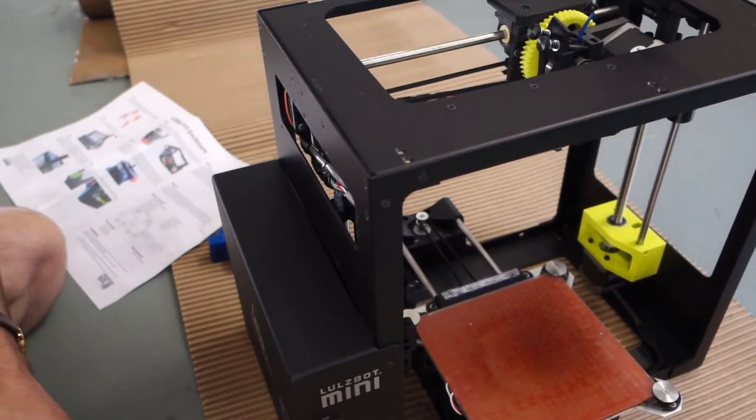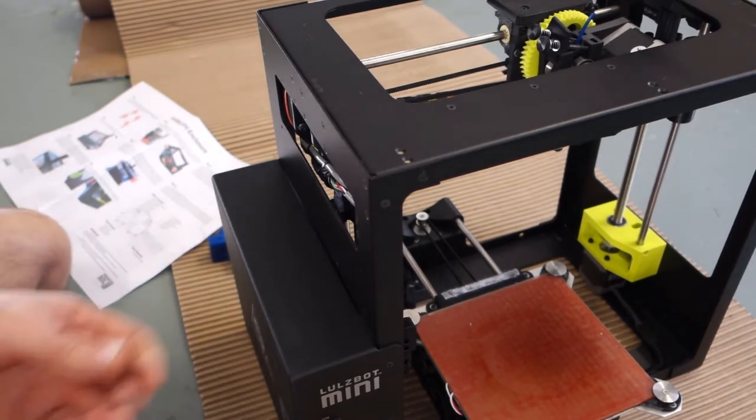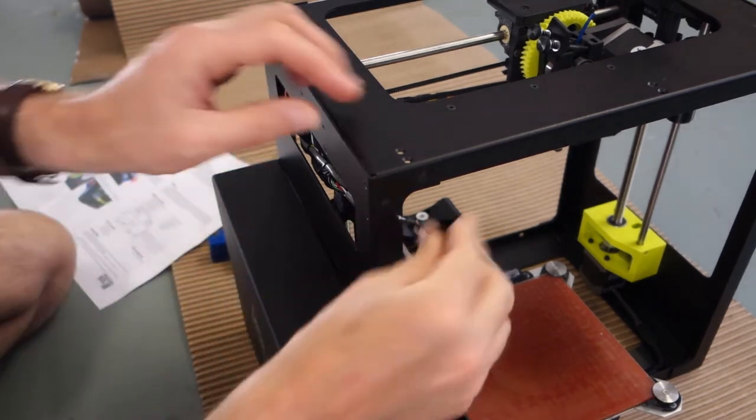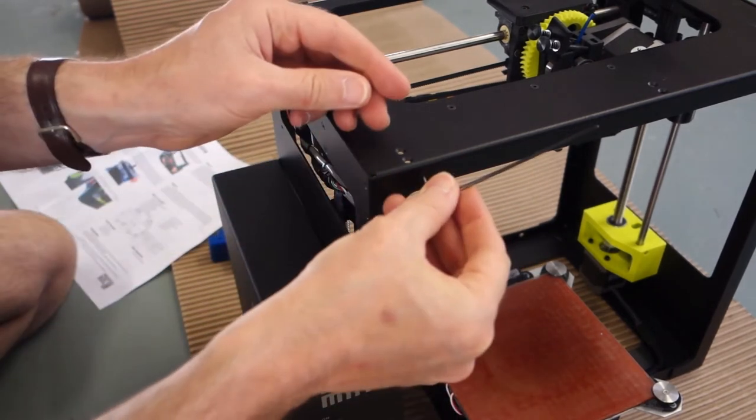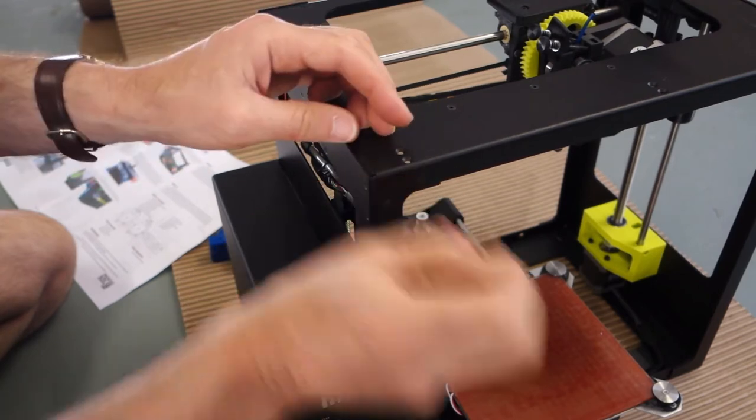The first task is to fit the brackets that I printed out. You have to remove a couple of the screws, I think the M3 screws, which hold the corners together.